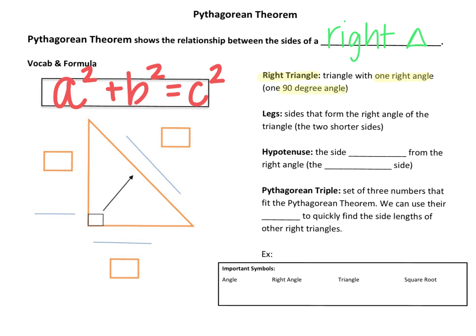Looking at the orange diagram to the left, let's label this right triangle together with some key vocabulary. The first key vocabulary word is a leg. The legs are the sides that form the right angle of the triangle, so it's the two shorter sides that form the right angle at their vertex. Let's label these two sides together. In the Pythagorean Theorem, our two legs are labeled A and B.